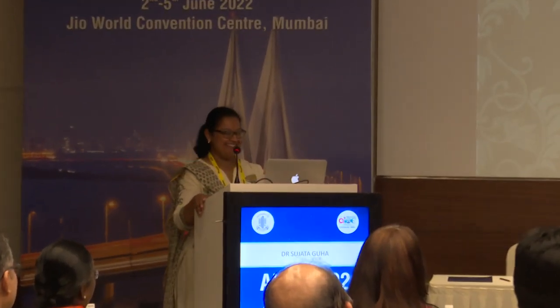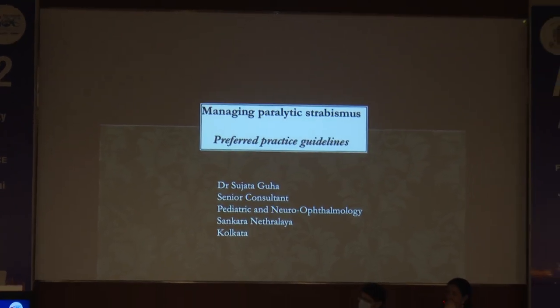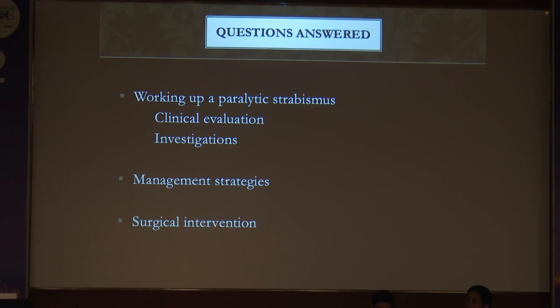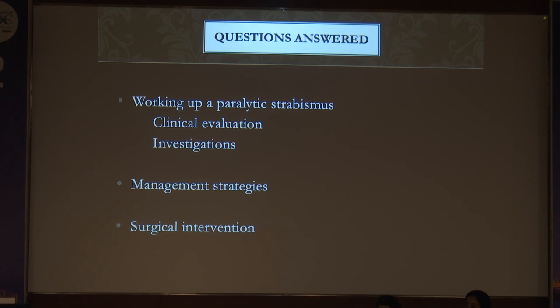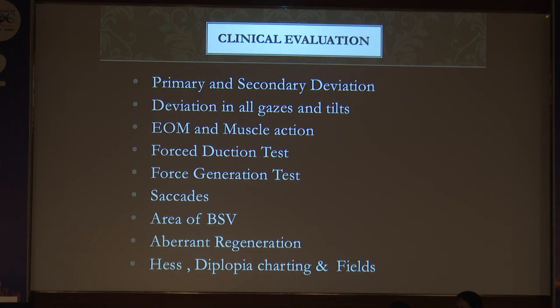We shall now go on to Dr. Sujata Goha, a very popular and highly experienced pediatric neuro-ophthalmologist from Shankar Netralaya, Kolkata. She is going to talk on managing paralytic strabismus — preferred practice guidelines in six minutes. I shall be talking on what you need to do, document, investigate, manage, and if you plan surgery, what should it be in the next six minutes. Following Dr. Jithani, you should document these key things: primary and secondary deviation noted in prism diopters and the fixating eye.